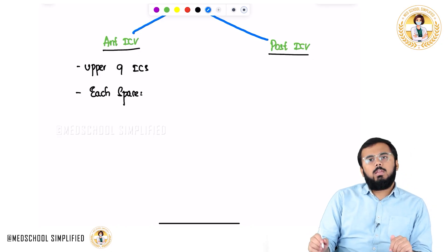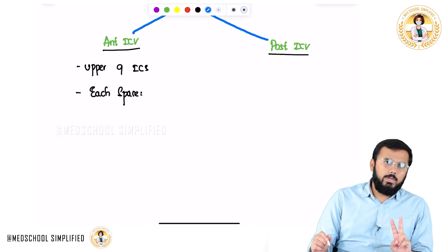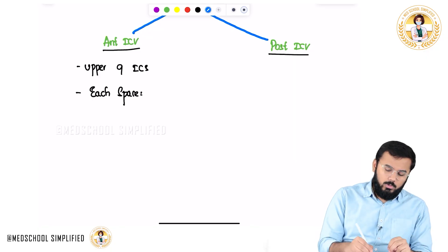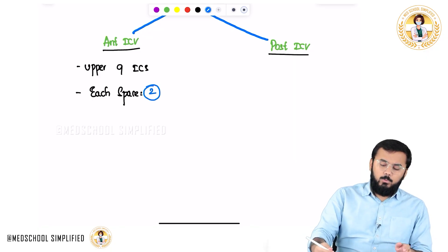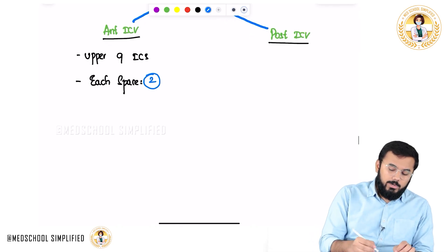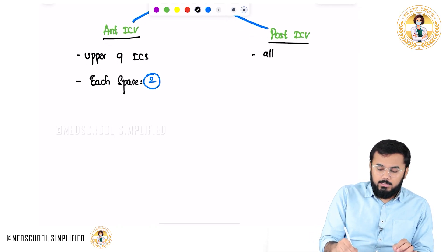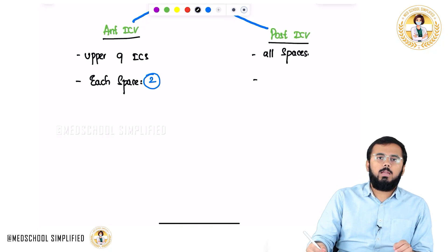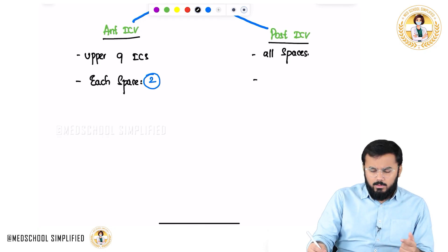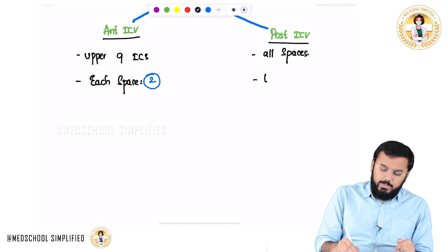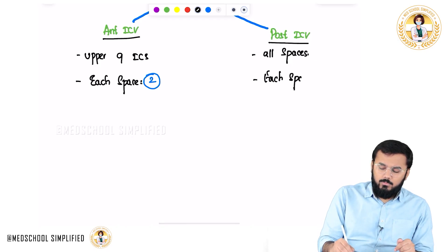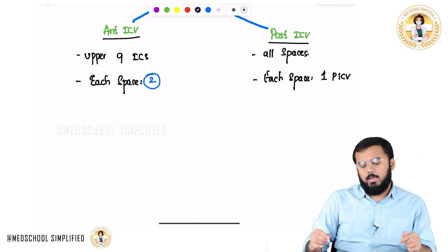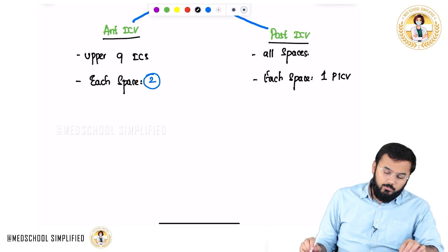Same like anterior intercostal arteries, anterior intercostal veins are also two per space. When it comes to the posterior intercostal vein, posterior intercostal veins are located in all spaces, same like arteries — each space contains one pair of posterior intercostal veins. Let us first discuss about these posterior intercostal veins.